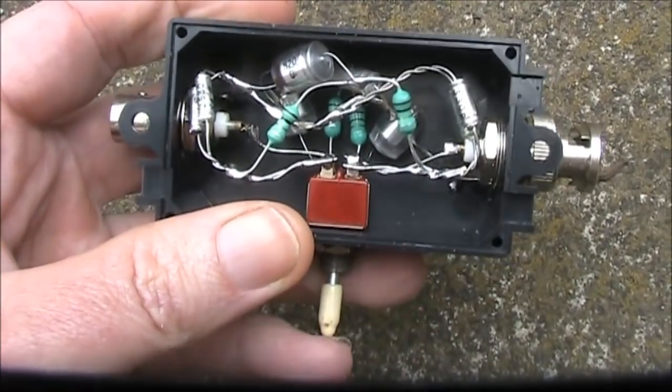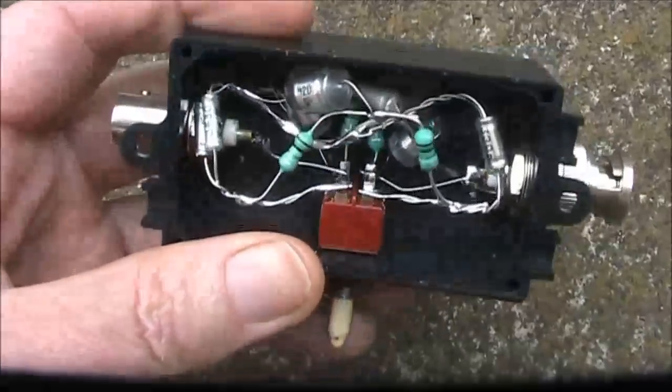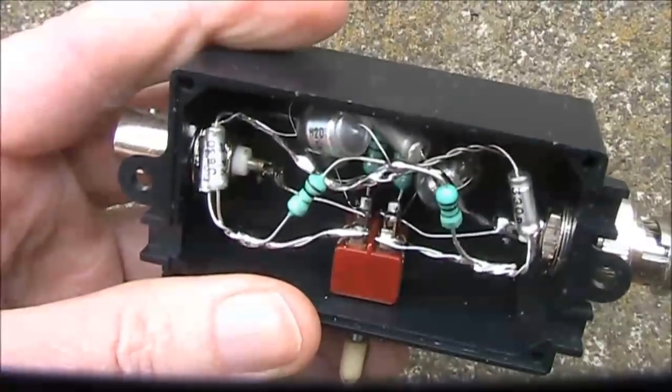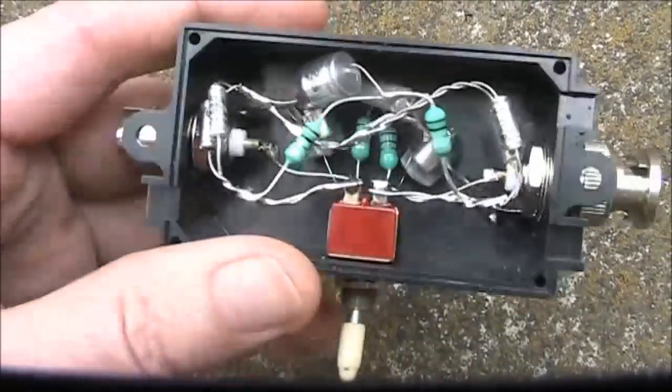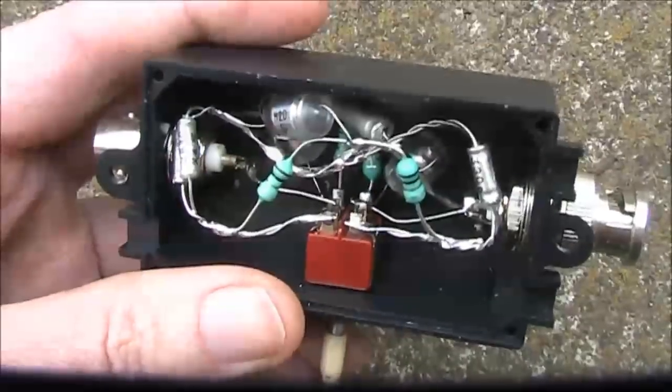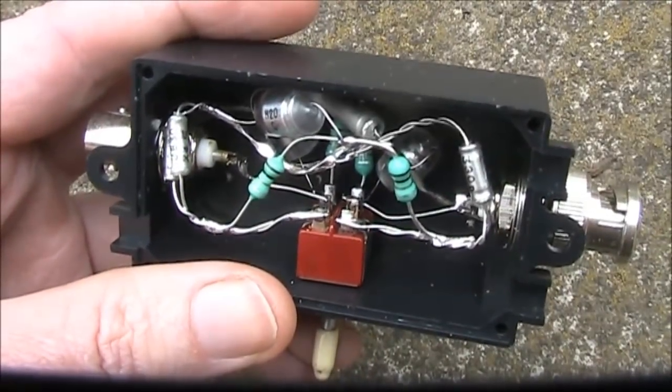I'm using a double pole double throw switch to change the band. The centre connection on each half goes to the input or output socket. The outside connections are used for each filter section.